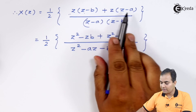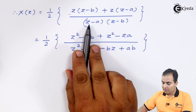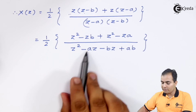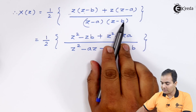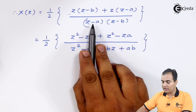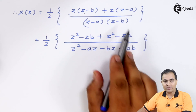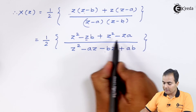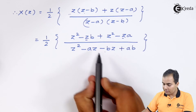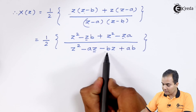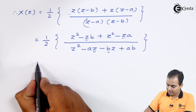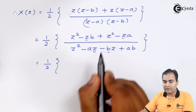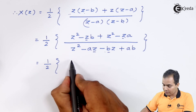Expanding: z·z = z², z·(−a) = −az, z·z = z², z·(−b) = −bz. In the denominator: z² minus az minus bz plus ab. Taking z² + z² = 2z², and taking minus z common from the −az and −bz terms gives minus z(a+b), resulting in 2z² − z(a+b) in the numerator and z² − z(a+b) + ab in the denominator.